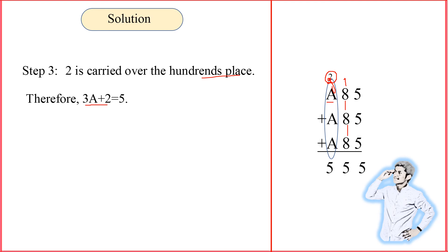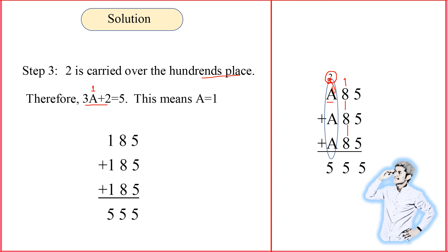The carry into the hundreds place is 2. So 3A plus 2 equals 5. The only possible value from 1 to 9 is A equal to 1. Substituting: the ones place gives 5, tens place gives 25 with carry 2, hundreds place gives 5. Everything checks out. So A equals 1, B equals 8, and C equals 5.